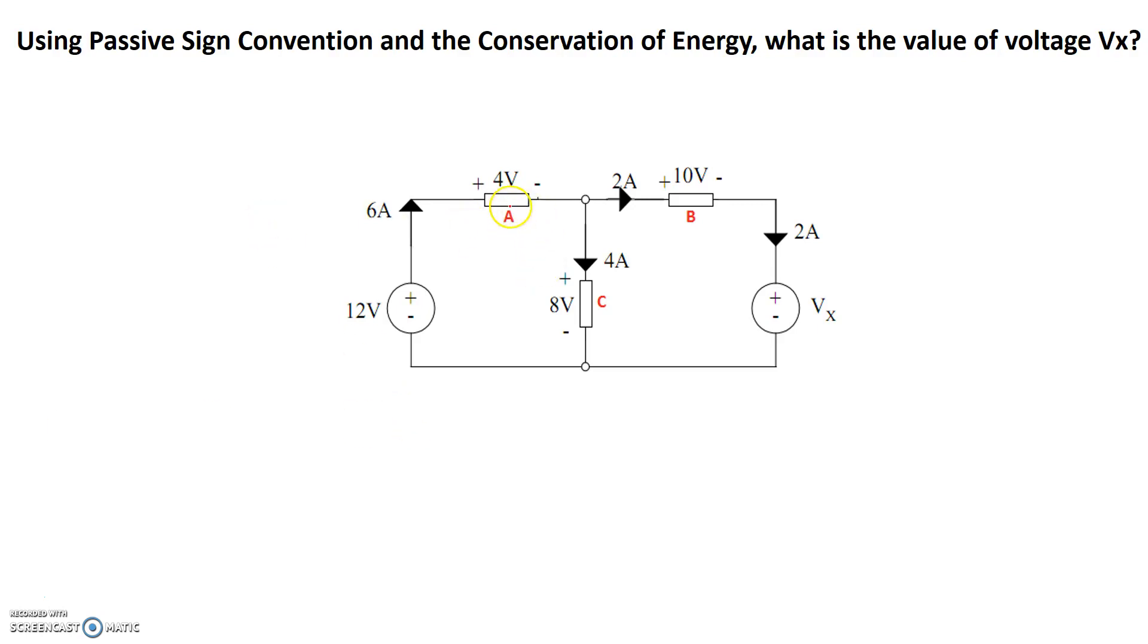I've labeled three circuit elements A, B, and C, and two voltage sources, one 12 volt and another unknown voltage source. So let's start out with element A.